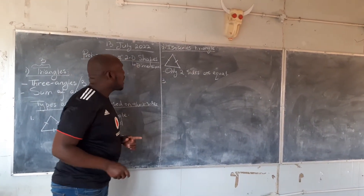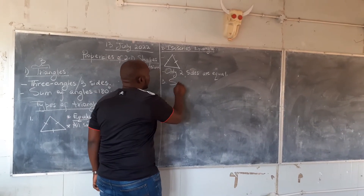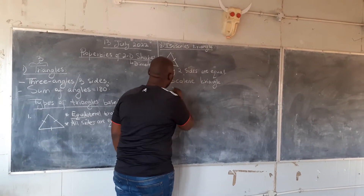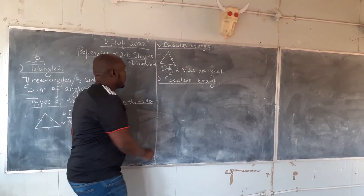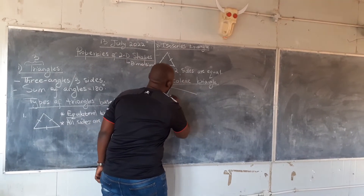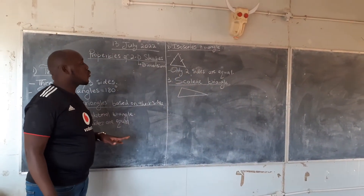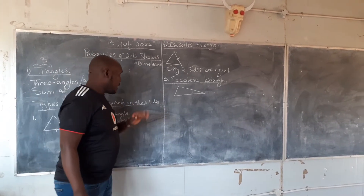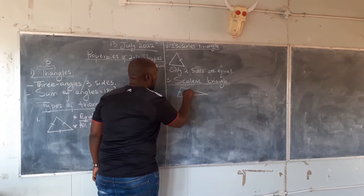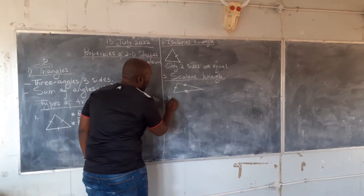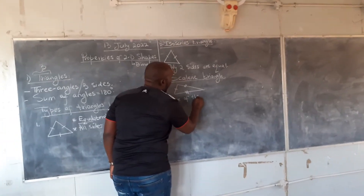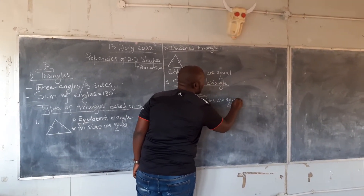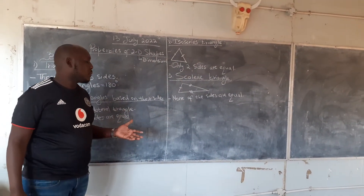The third type of triangle based on sides is the scalene triangle. None of the sides are equal. This side is the shortest, followed by the next, and then this side here is the longest. None of the sides are equal in a scalene triangle.